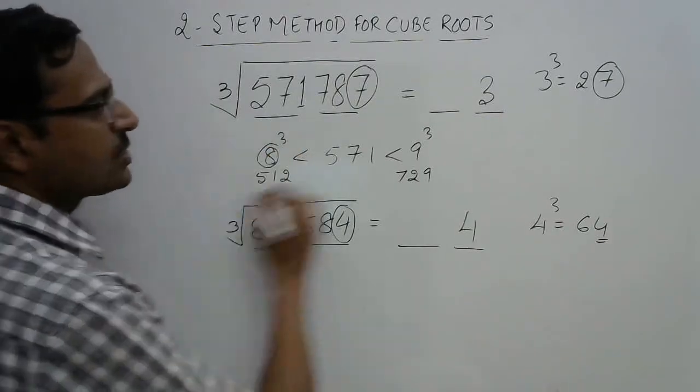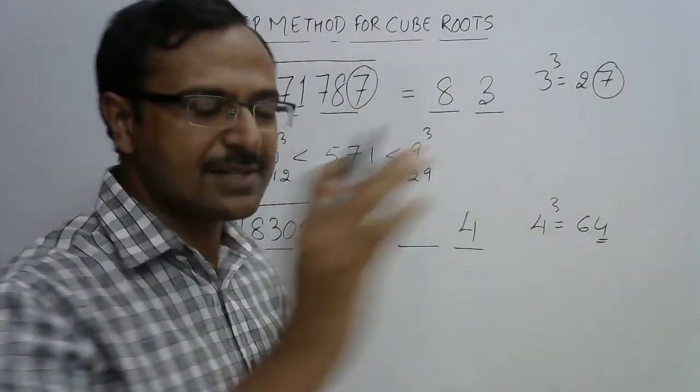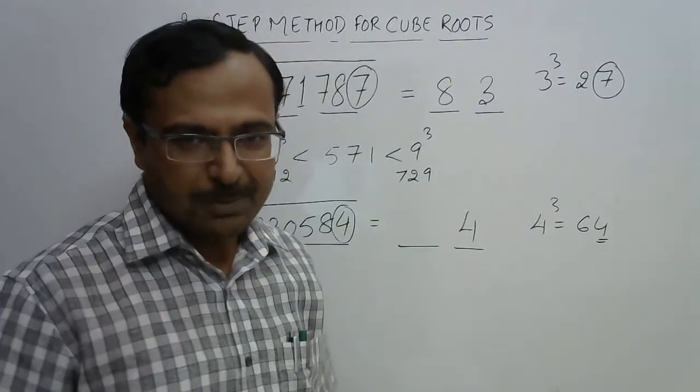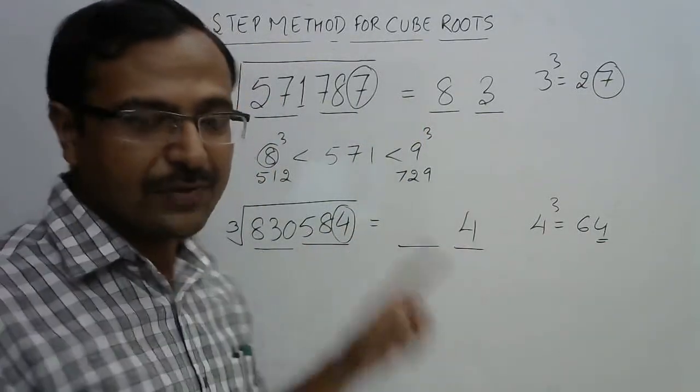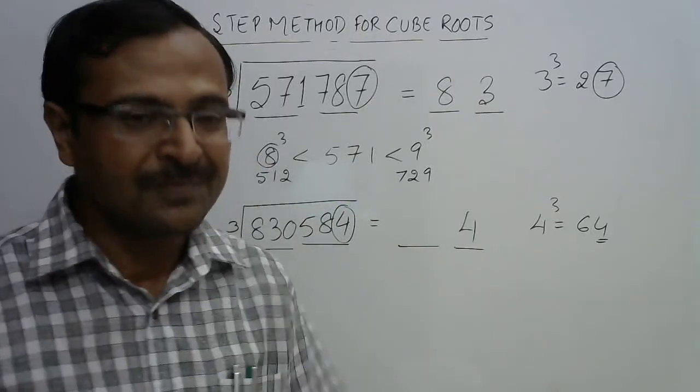So this 8 will come here, giving you the answer 83. You can pick up the calculators and check whether 83 × 83 × 83 gives you 571787 or not.